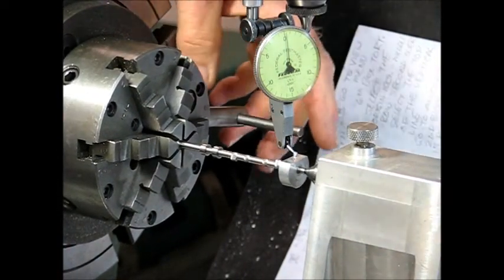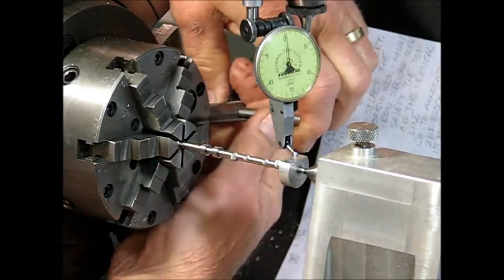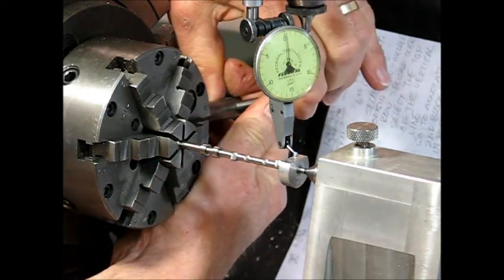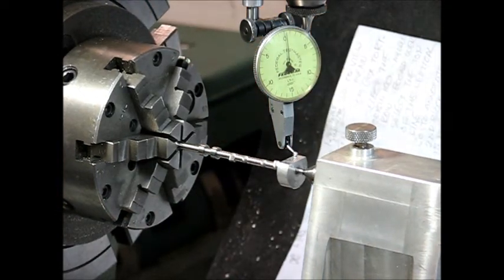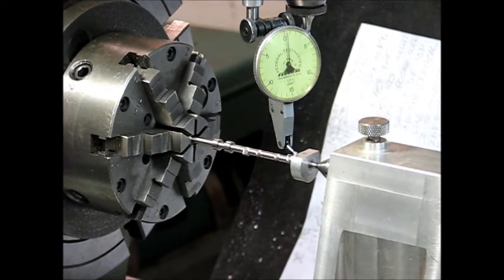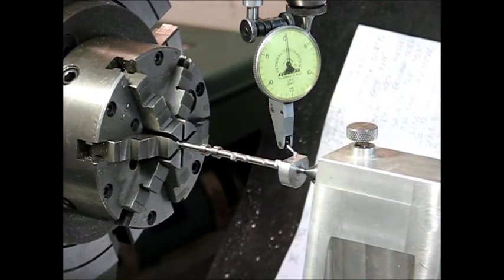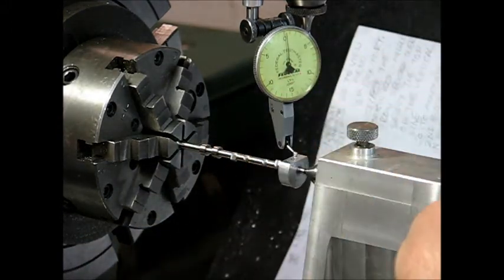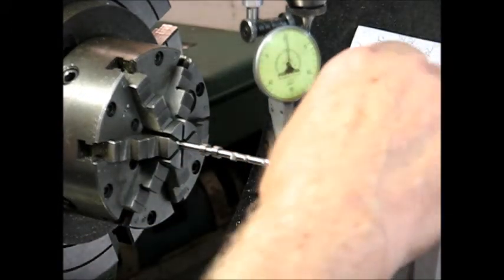Once zero is established, the chuck is tightened. You have zero all the way across. The tail stock, make sure that it's snubbed up.